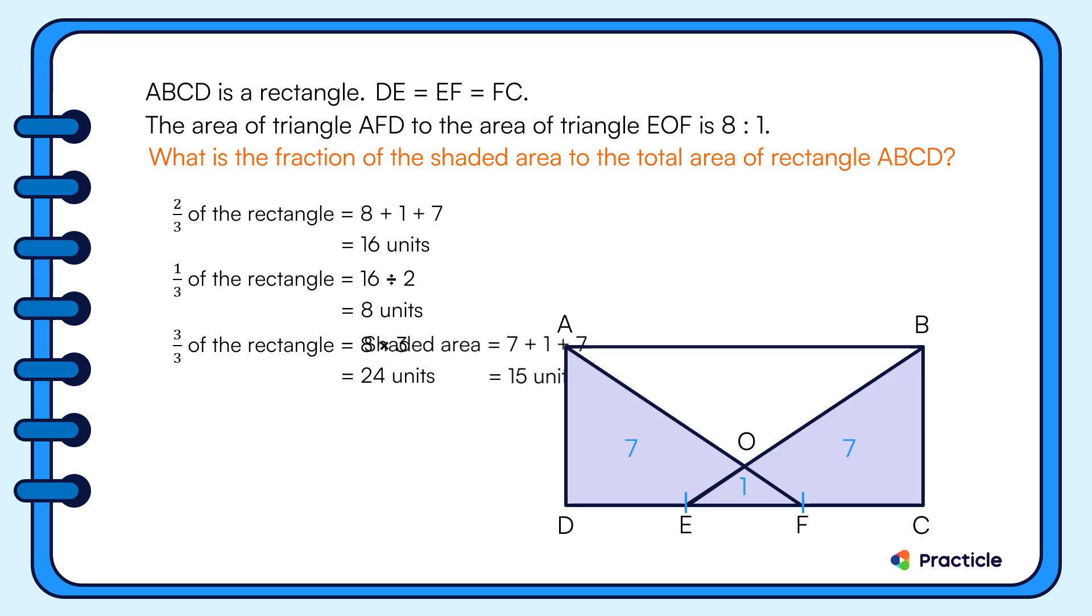And now we are ready to answer the question. The fraction of the shaded area to the total area of rectangle ABCD is 15 out of 24. We can simplify this further to 5 over 8.